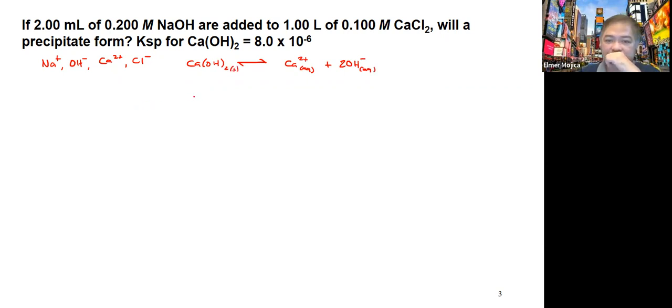In solving this problem, we just look at the ion product coming from here. If you're going to look at this, Ksp equals calcium 2 plus times OH minus squared. We just need to get the Q or the so-called ion product.